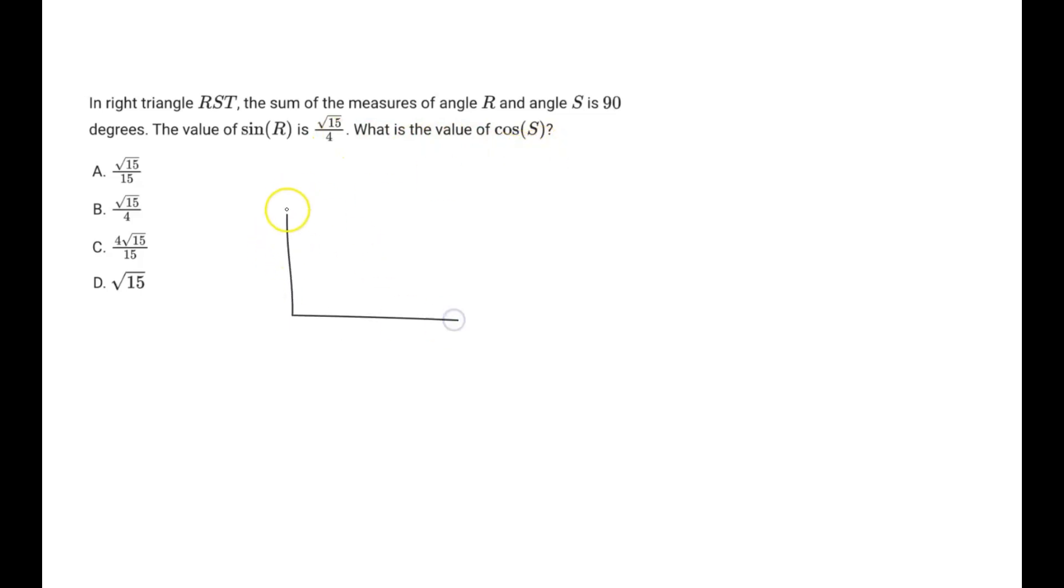So let's draw a right triangle here. We have R up here, angle S, and T is the 90 degree angle.